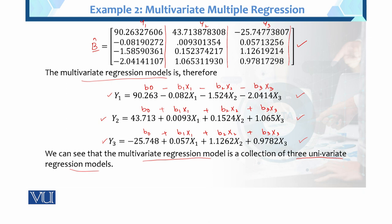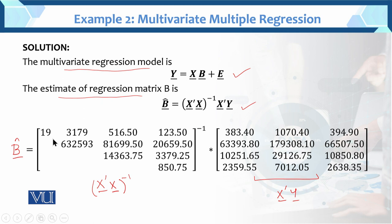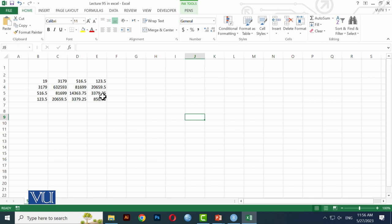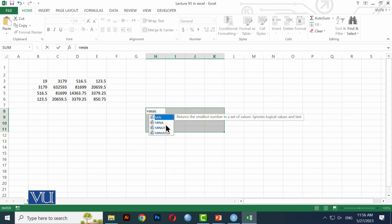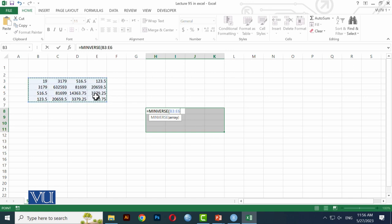This is the example of multivariate multiple regression. This is X transpose X. We won't check it manually, we'll check it in Excel. Here is the data of X transpose X entered in Excel. It's 4×4 data for X transpose X. Now I need to find its inverse. It's 4×4, so I highlight 4×4 cells. Write equals to MINVERSE. Whose M inverse? Highlight these values, close the bracket, then Shift+Control+Enter.